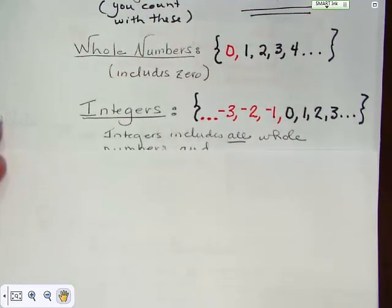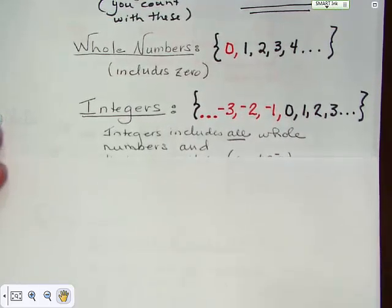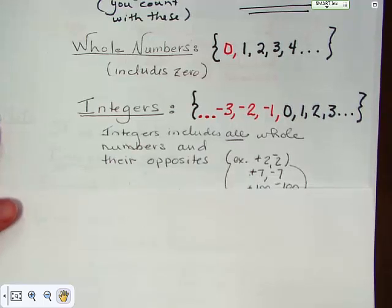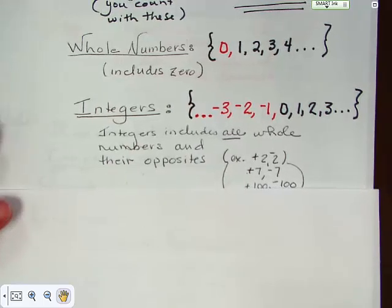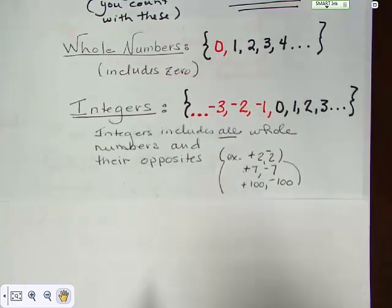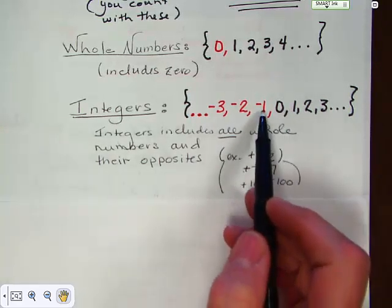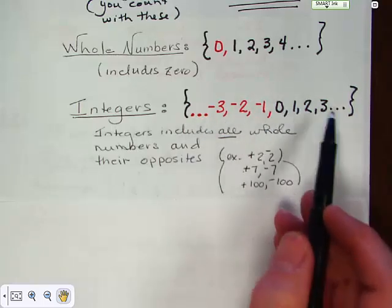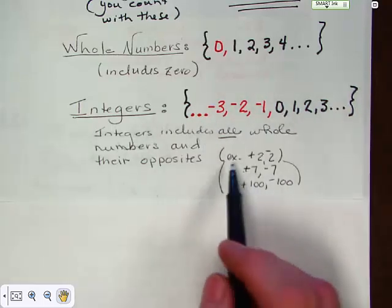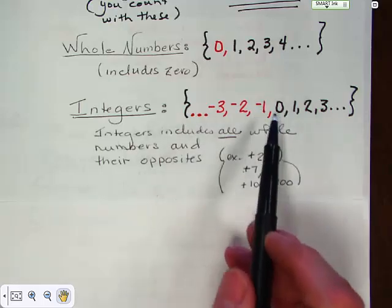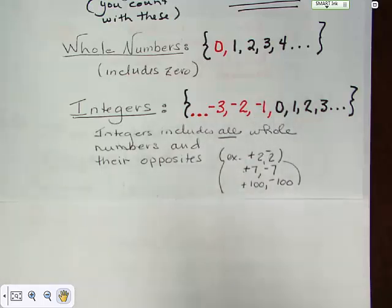The next group is called the integers, and the integers include all of the whole numbers and their opposites. So if you have one, you would have negative one; two, negative two; three, negative three; a hundred, negative a hundred. Zero doesn't have a negative, but it is a part of the whole numbers, so that's why it's included with the integers.